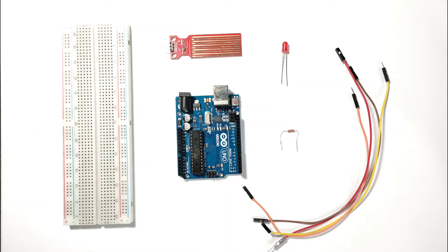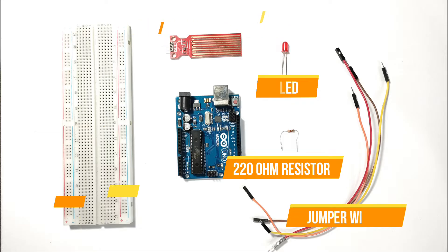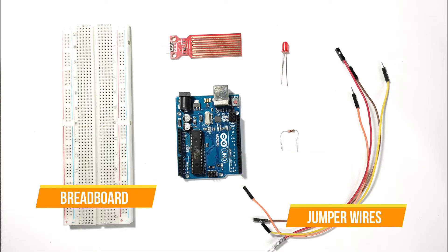First, let's go over the components you'll need for this project. An Arduino board, a water level sensor, an LED, a 220 ohm resistor, jumper wires, and a breadboard.